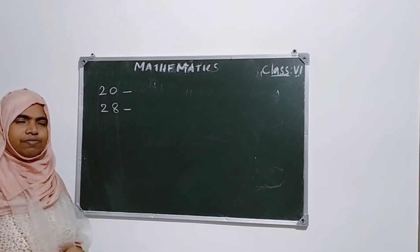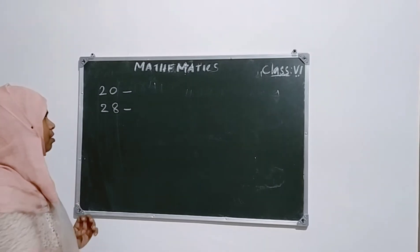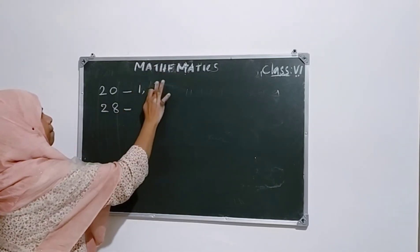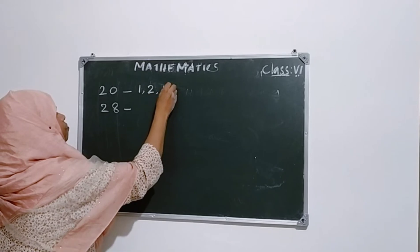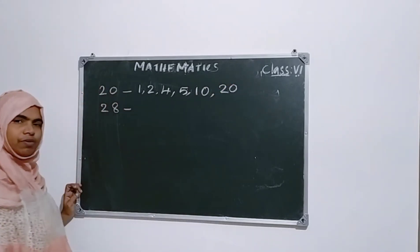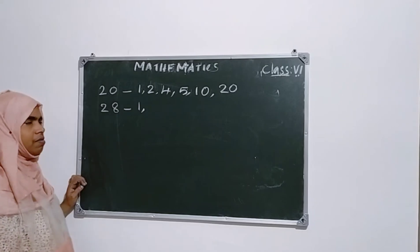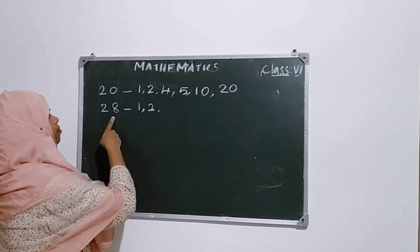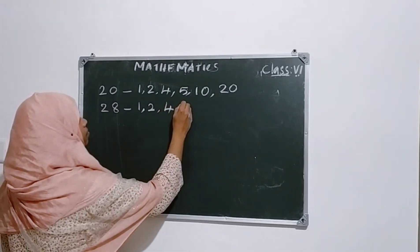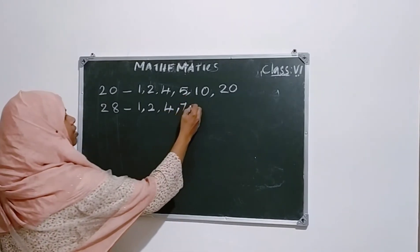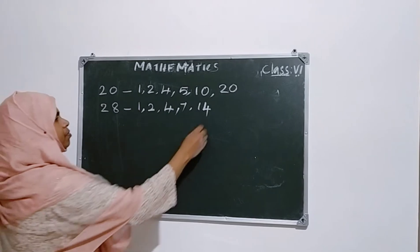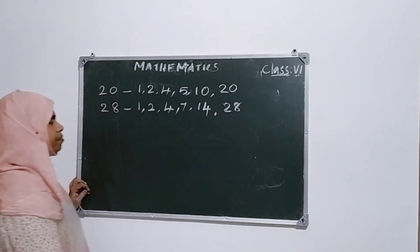We know factors. First we need to write factors of 20 and factors of 28. Factors of 20: 1, 2, 4, 5, 10, and 20. Then factors of 28: 1, 2, 4, 7, 14, and 28. These are the factors.